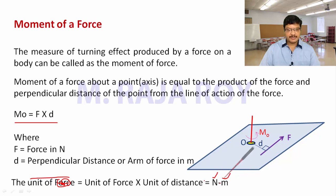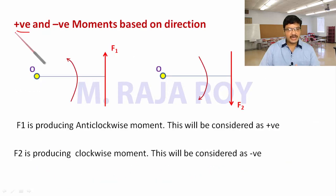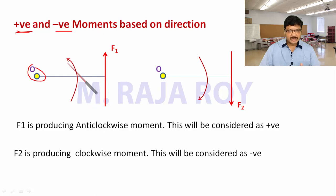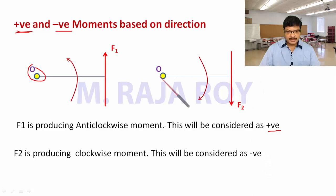How to identify the positive moment and negative moment based on the direction? Suppose when you are applying the force about a point O, this force is producing the moment in the counterclockwise direction. When the force is producing the moment in the counterclockwise direction, that you have to assume as positive. When the force is acting in the downward direction about this point, then this force is producing moment in the clockwise direction, and we have to consider that as negative.